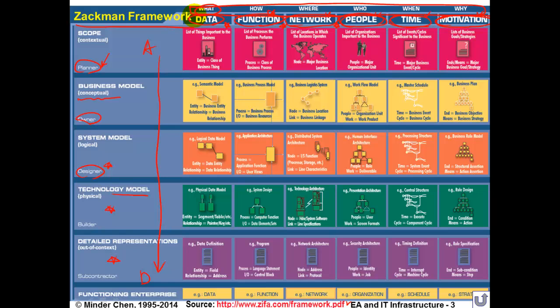In each cell of the framework, you specify what kind of documentation, diagram, or abstract model needs to be created to describe that column for the stakeholder at that row's level of abstraction. This can be a very powerful planning tool to give you a comprehensive understanding of what's happening in the enterprise.